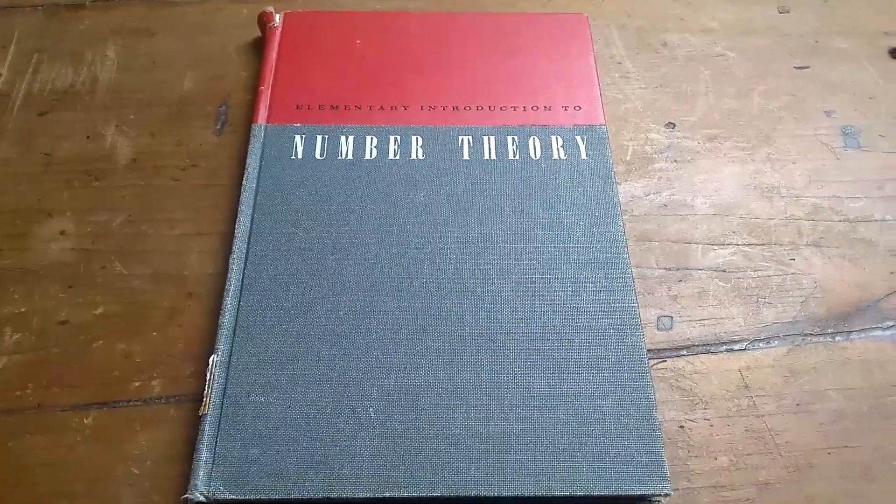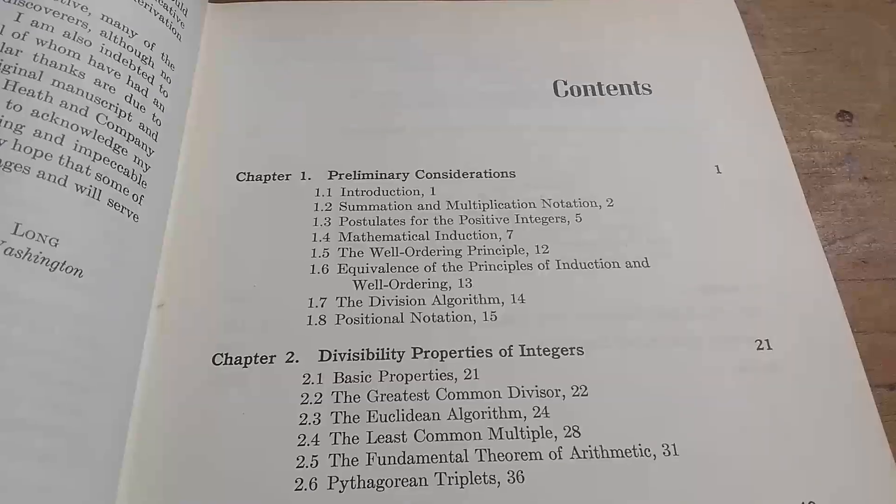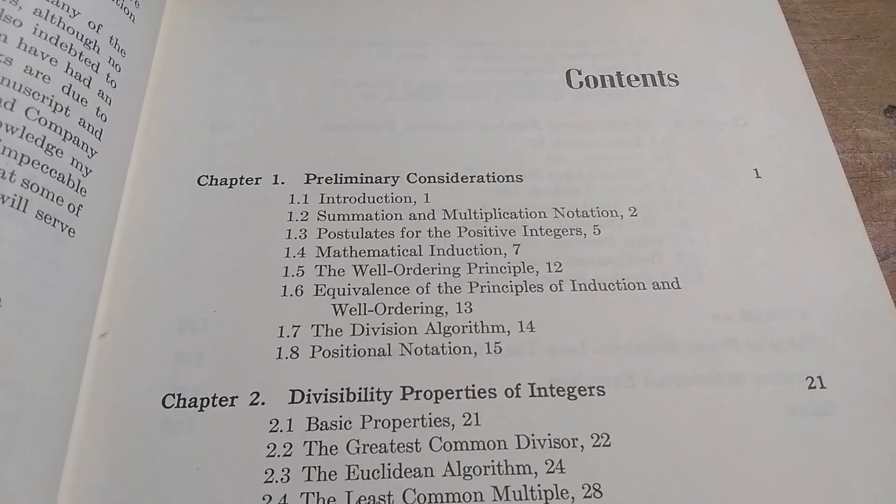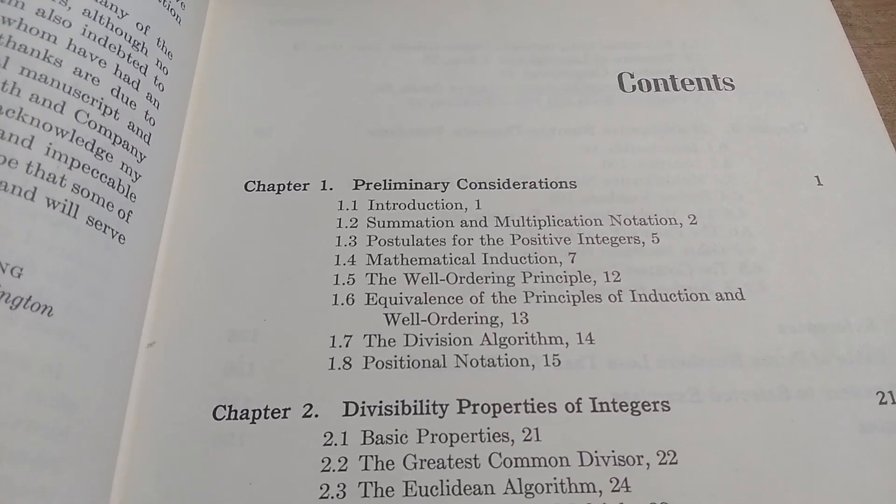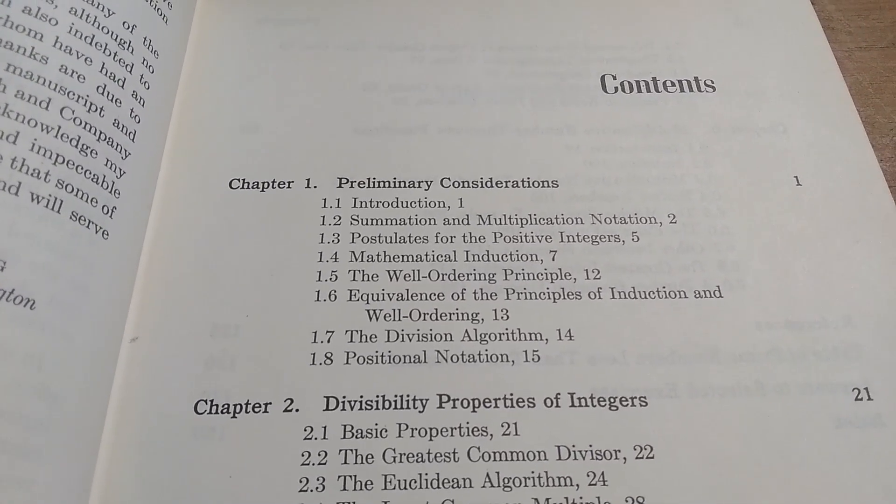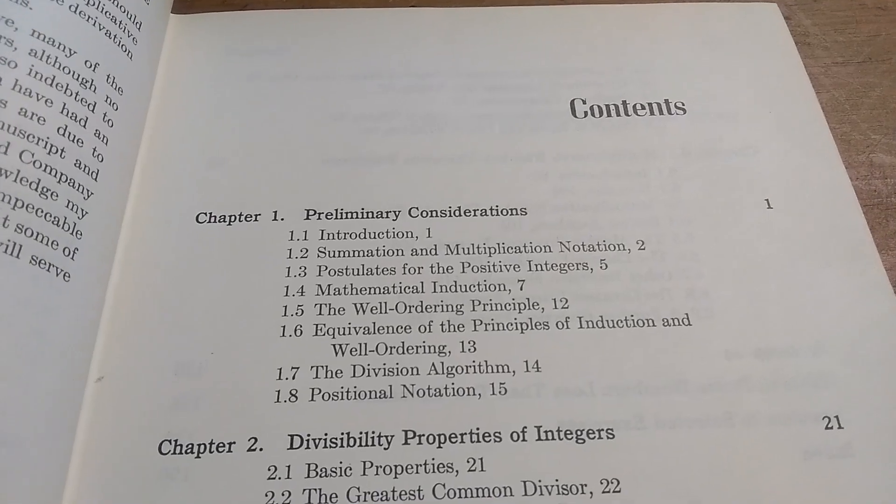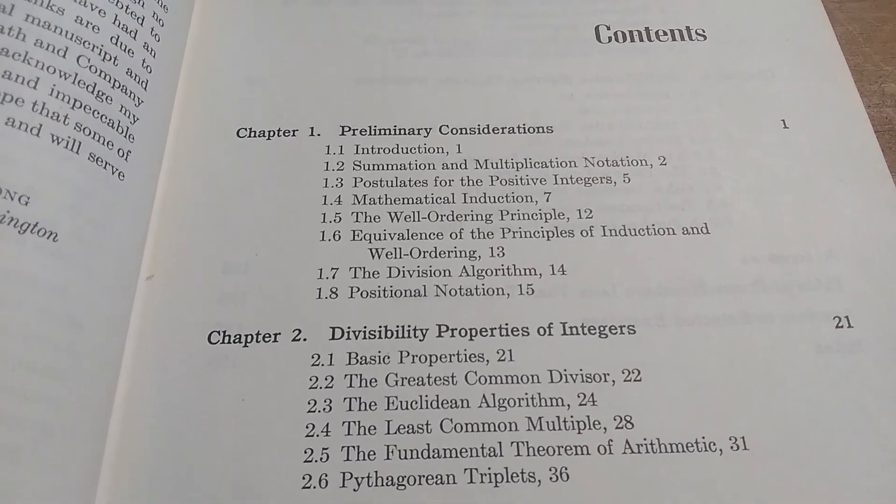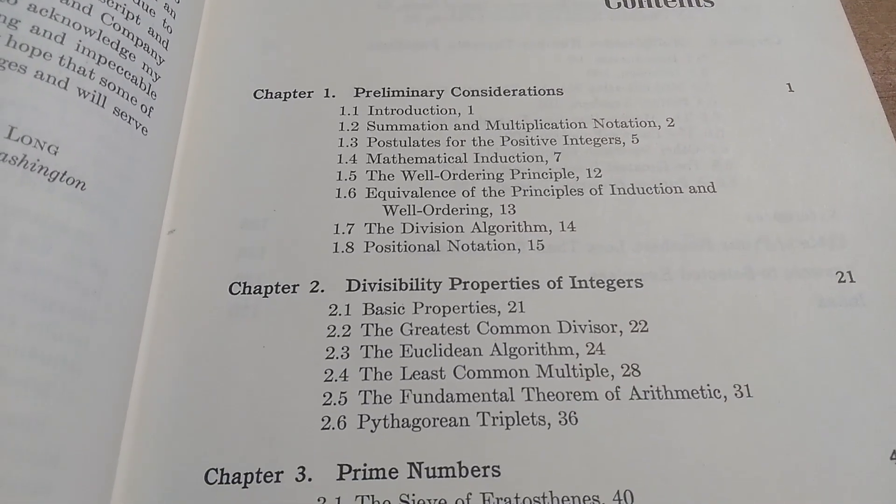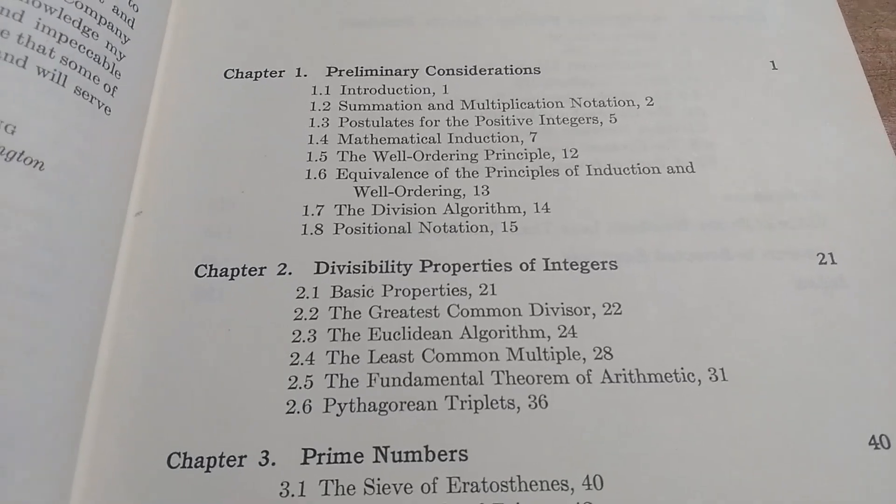Let's take a look inside this book. So this is the table of contents. It starts off with preliminary considerations. I have actually read this entire chapter. Then we have divisibility properties of integers. I've also read this entire chapter.